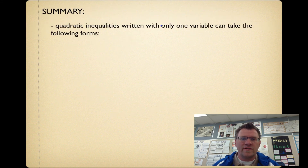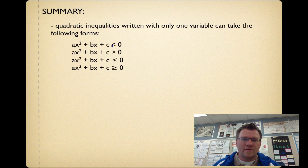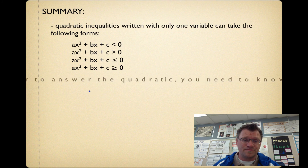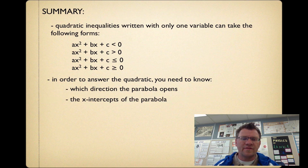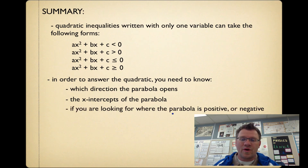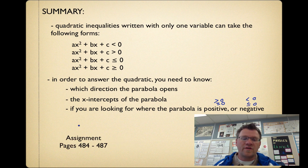In summary, quadratic inequalities in one variable take the forms ax squared plus bx plus c less than 0, greater than 0, less than or equal to 0, or greater than or equal to 0. To solve them, you need to know which direction the parabola opens, the x-intercepts (found by factoring or the quadratic formula), and whether you're looking for where the parabola is positive (greater than 0) or negative (less than 0). Your assignment is on pages 484 to 487. Good luck, and we'll see you in class.